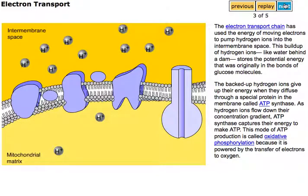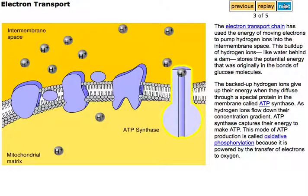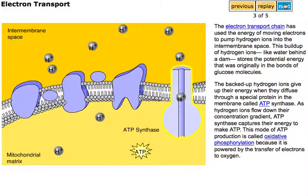The backed up hydrogen ions give up their energy when they diffuse through a special protein in the membrane called ATP synthase. As hydrogen ions flow down their concentration gradient, ATP synthase captures their energy to make ATP.